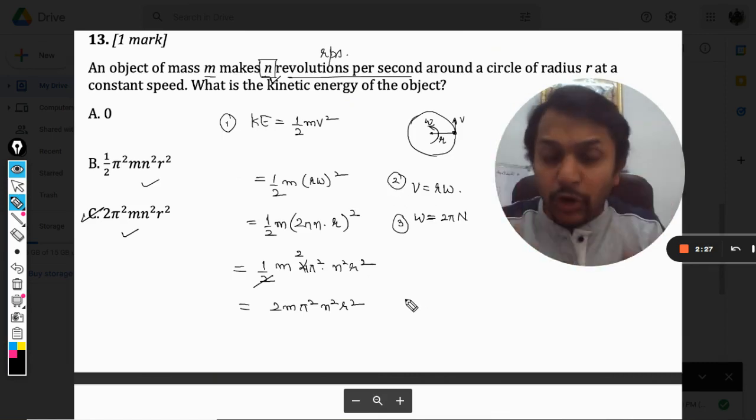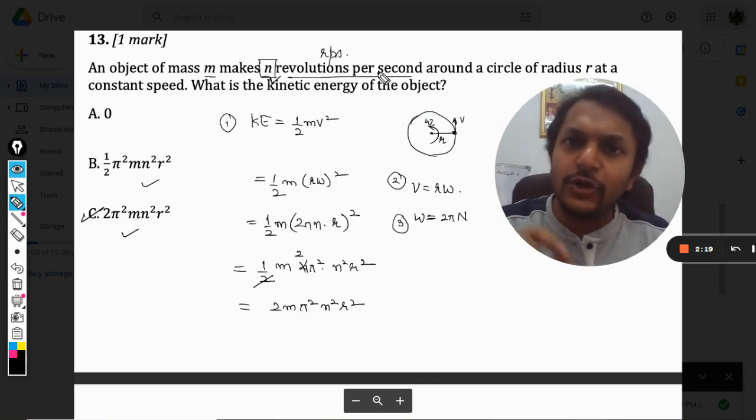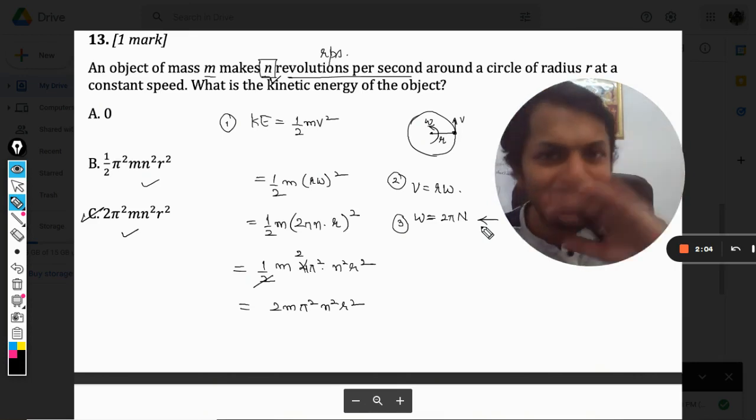So this is a very important question I would say, please do not overlook this. This is a very important question because whenever revolutions per second or revolutions per minute is given, it becomes difficult for students to find what will be the angular velocity, because this formula they do not remember. So that's why this is a very important question. This is Professor Gudon, dear students, all the best, bye.